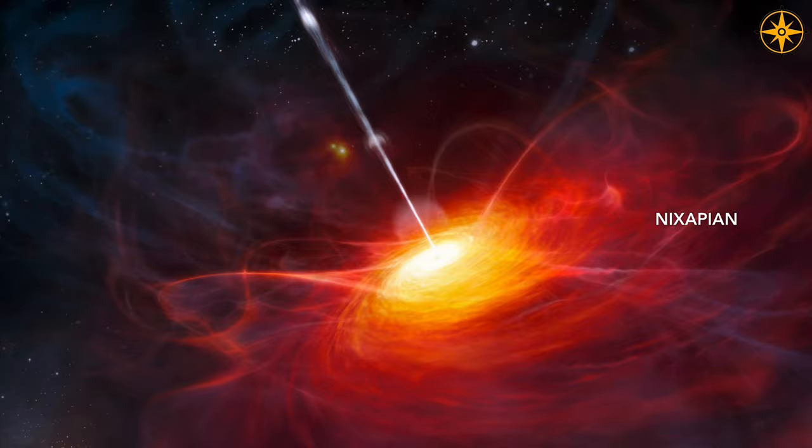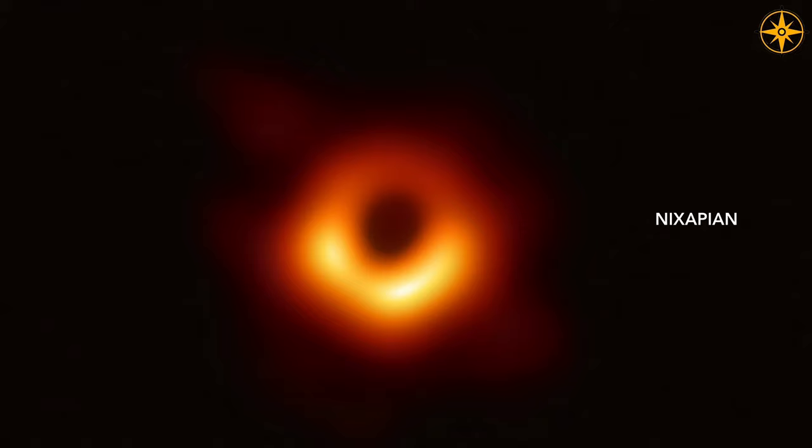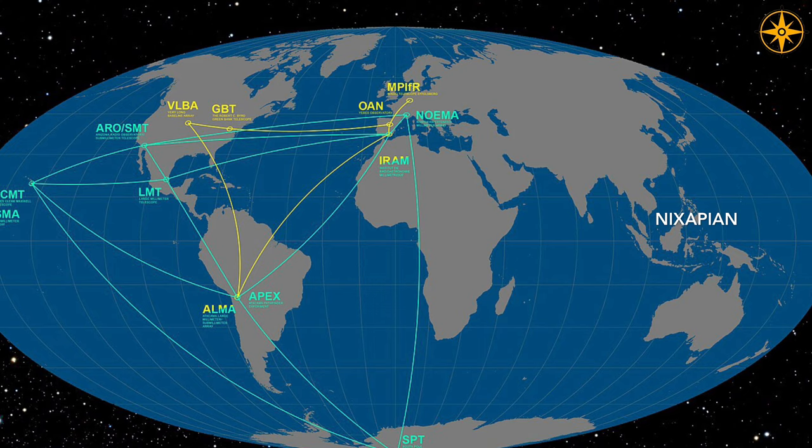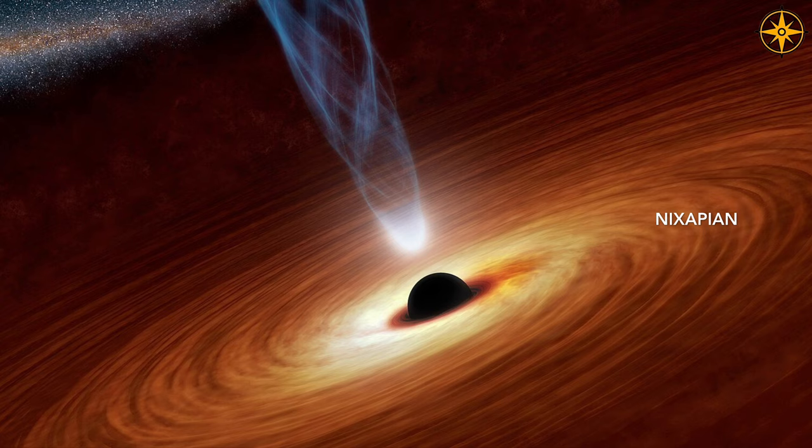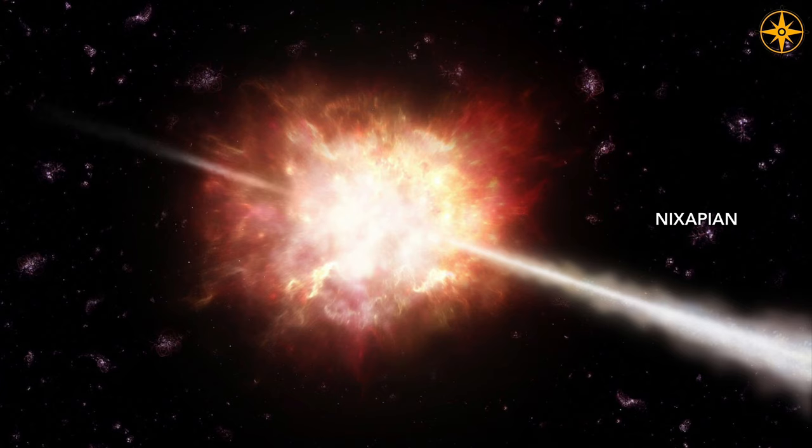In 2019, the first image of a black hole was captured using the International Event Horizon Telescope. They captured the black hole's shadow, as a black hole doesn't reflect any light. In a black hole, all mass has been squeezed into a very tiny space. The smallest black hole was believed to be created when the universe began — the size of a single atom but with the mass of a mountain.